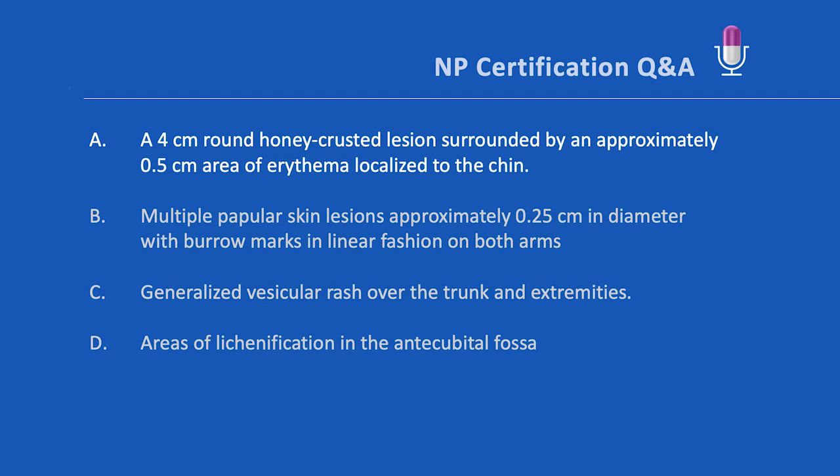Option B: multiple papular skin lesions approximately 0.25 centimeters in diameter with burrow marks in a linear fashion on both arms. This actually describes the classic presentation of scabies. Yes, other kids in her play group have similar skin lesions and scabies is contagious, but the distribution is incorrect for impetigo — or at least a much less common presentation.